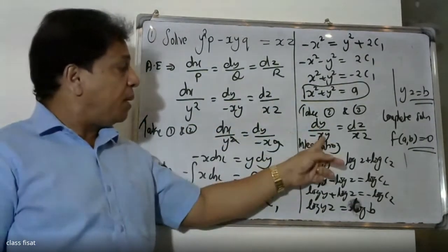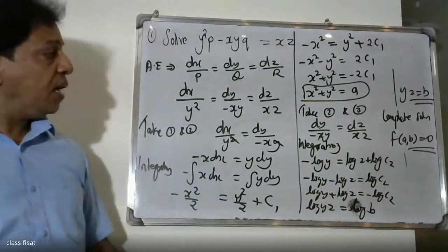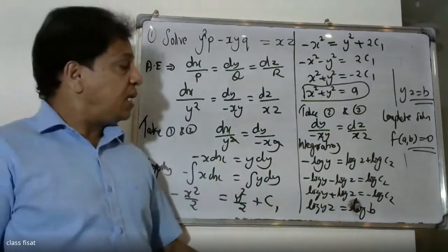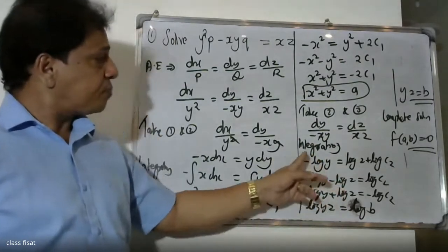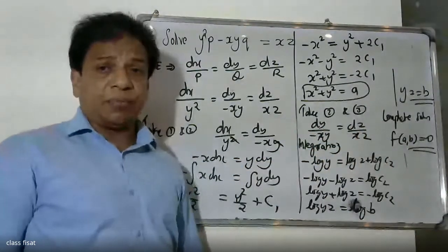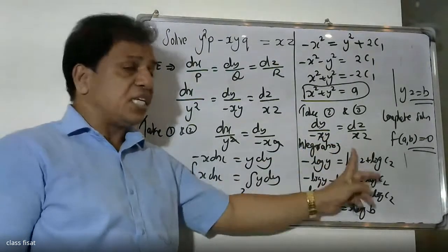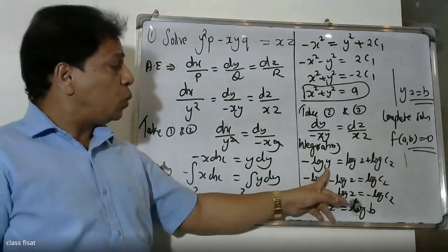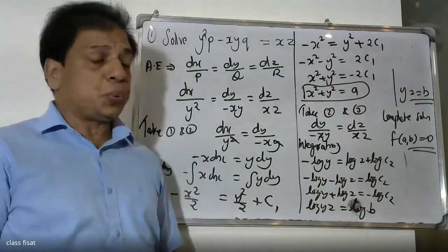Taking ratios 2 and 3: dy by minus xy equals dz by x. The x cancels, giving dy by y equals dz by z. Separating variables and integrating: minus log y equals log z plus log c². So minus log y minus log z equals log c².